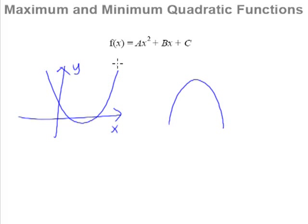We call this u-shaped curve a minimum quadratic curve, and we call this n-shaped curve a maximum quadratic curve.